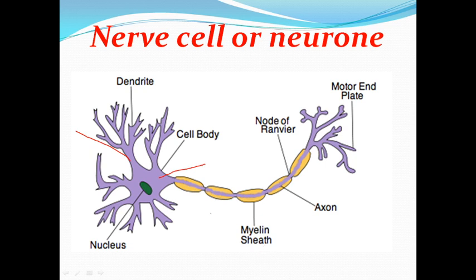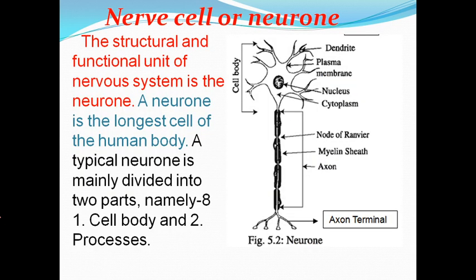This is the myelin sheath axon — this whole part is known as the axon. This is the node of Ranvier. The structural and functional unit of the nervous system is the neuron. So, neuron is the structural and functional unit of the nervous system.